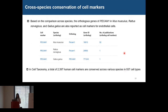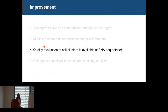In summary, from the assessment across publications, expression enrichment, and cross-species conservation, PECAM1 is one of the most robust cell markers for human endothelial cells. Since expression profiles are another important reference for annotating cell types, we provide quality evaluation of cell clusters in available single-cell RNA-seq datasets to help users choose high-quality datasets for further study.